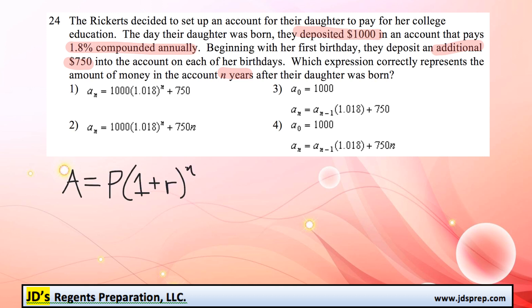This is a bit of a tricky question because right off the bat you may think you're going to be using the compound interest formula, which is written here where A is the final amount, P is the principal amount, R is the interest rate — in this case 1.8%, so 1 plus 1.8% would be 1.018 as a decimal — and n being the number of years.